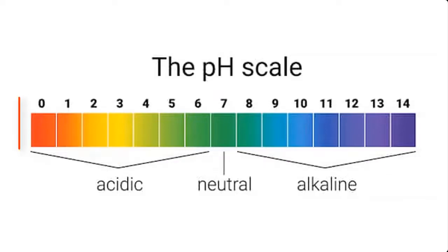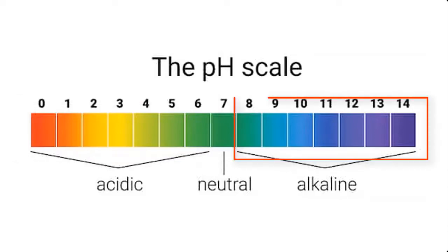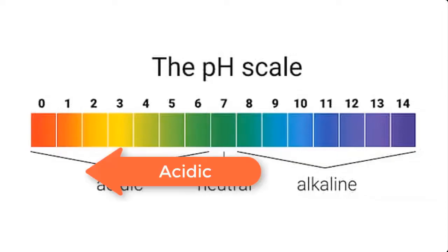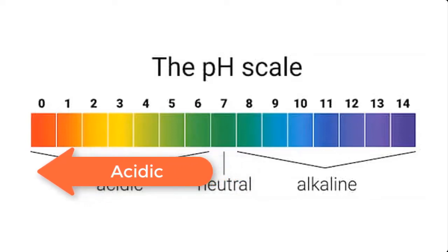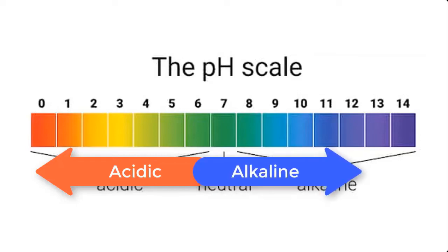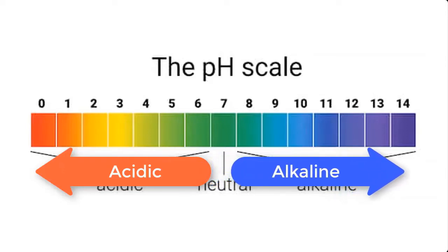pH is expressed on a number scale ranging from 0 to 14. Zero to 6 is the acidic part of the scale, and 8 to 14 is the alkaline part of the scale, while 7 stands for neutral. Acidity increases from 6 to 0, meaning 0 is more acidic than 1, and 1 is more acidic than 2. On the alkaline side, 8 is less alkaline than 9, and 9 is less alkaline than 10. In summary, 8 is least alkaline while 14 is most alkaline.